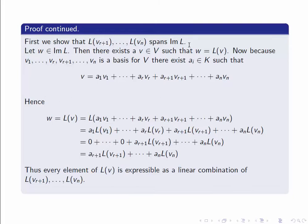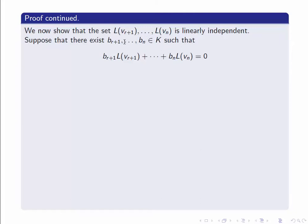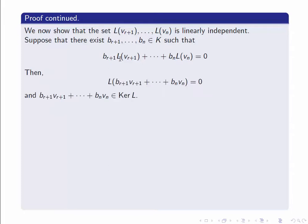The second part is to show that they're linearly independent. We take a linear combination and try to prove that if it equals zero, then all the coefficients must be zero. Suppose there exist elements Br+1 up to BN in our base field K such that Br+1·L(Vr+1) + ... + BN·L(VN) = 0. Because L is a linear transformation, this is the same as L applied to the linear combination of the Vs: L(Br+1·Vr+1 + ... + BN·VN) = 0, which means this linear combination is in the kernel.